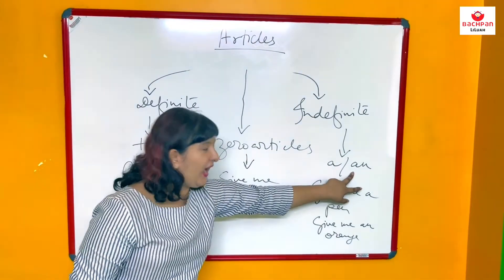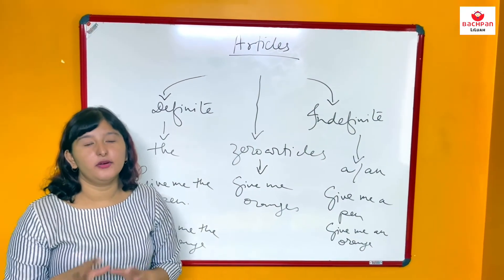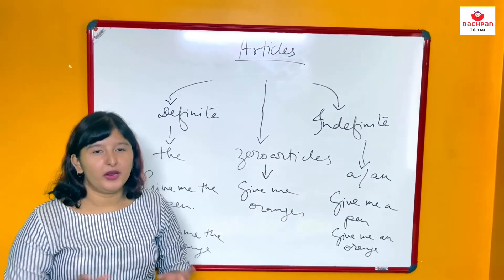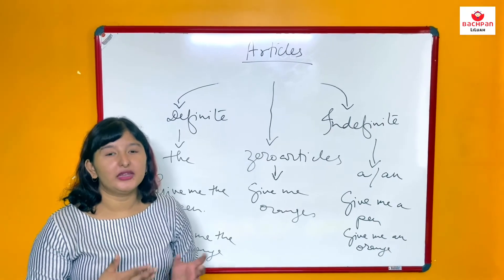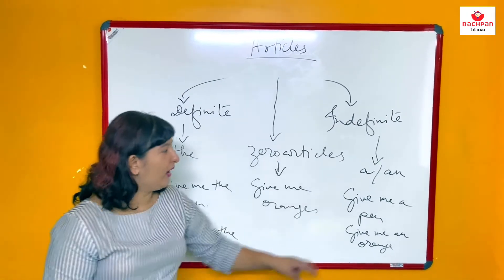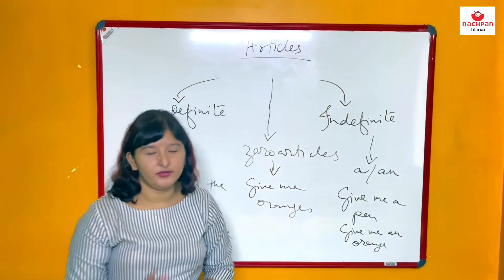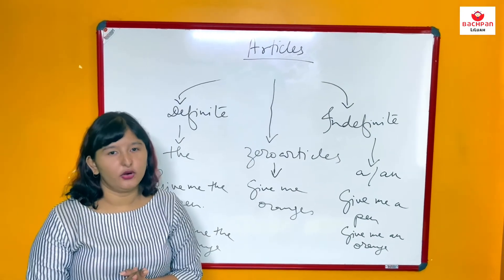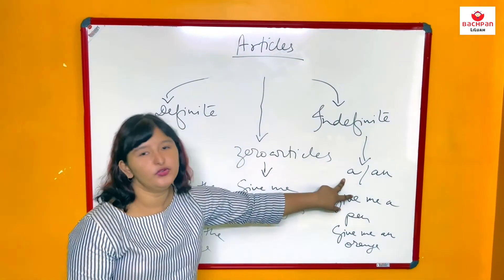As an is used whenever there is a vowel. A-E-I-O-U. Whenever a word is starting with A-E-I-O-U, you have to use an. Rest of them are the hard consonants. For them you have to use a.